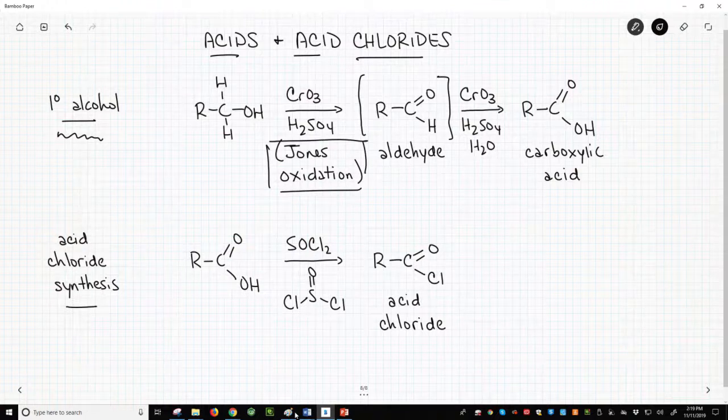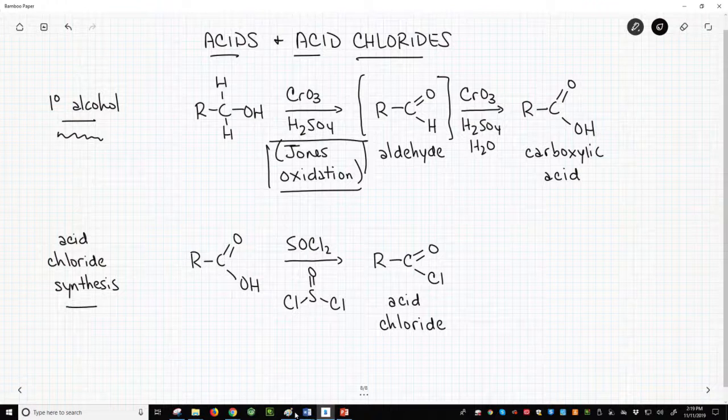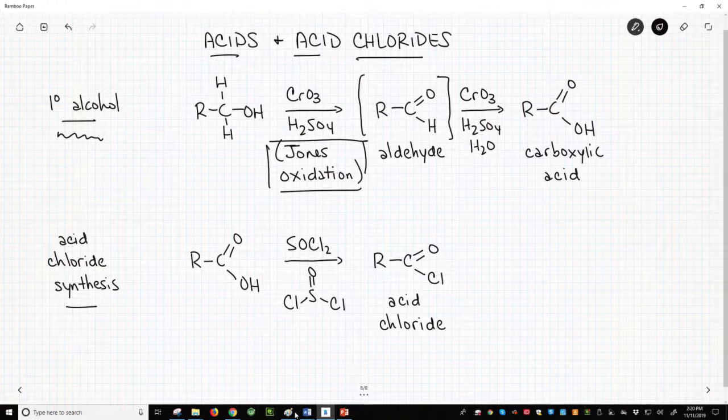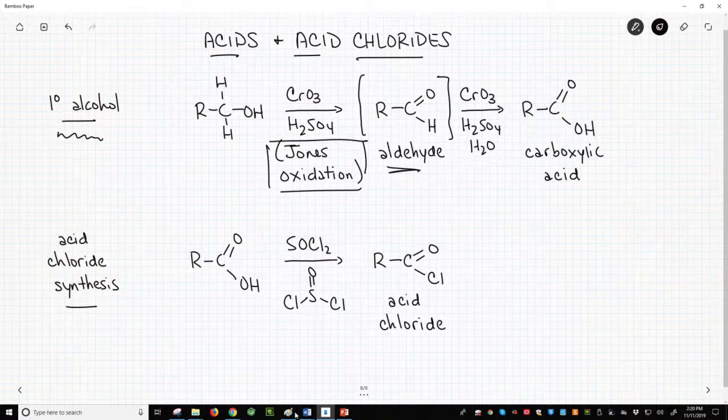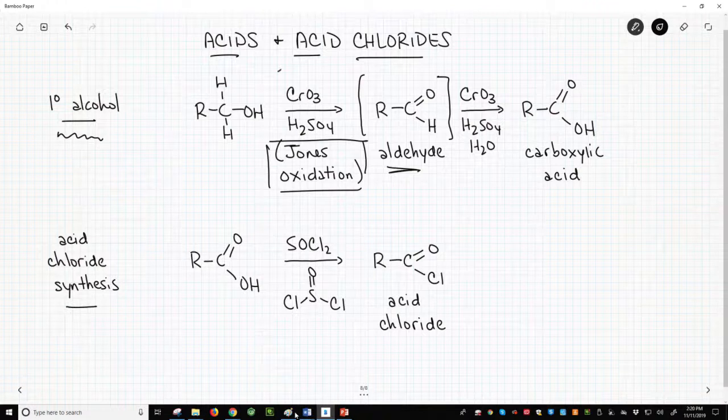This is on the top line of our slide. You have perhaps already seen the Jones oxidation used with secondary alcohols to make ketones. With primary alcohols, the Jones oxidation first converts the alcohol into an aldehyde through an elimination reaction, so we made a new pi bond. This is some form of an elimination reaction, specifically the Jones oxidation.